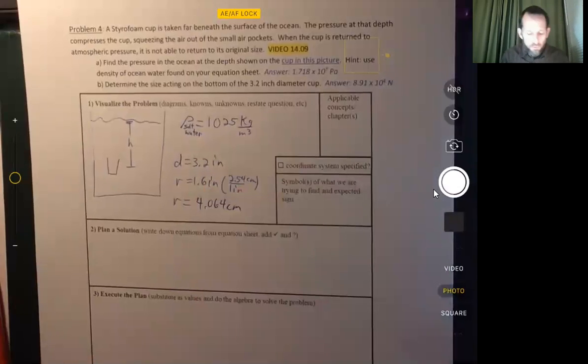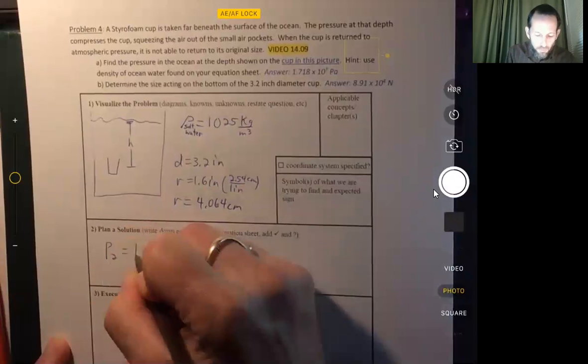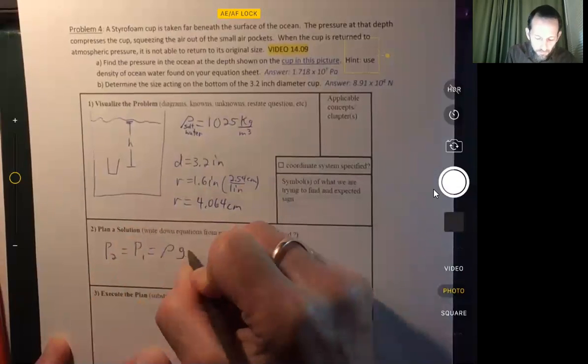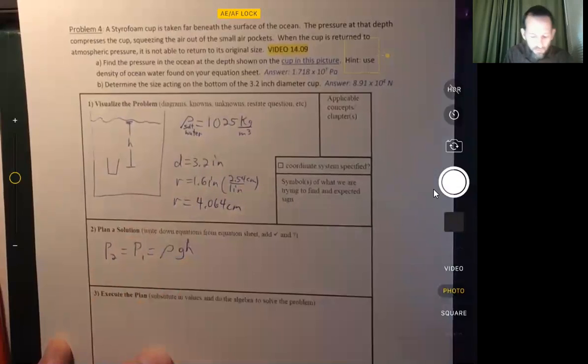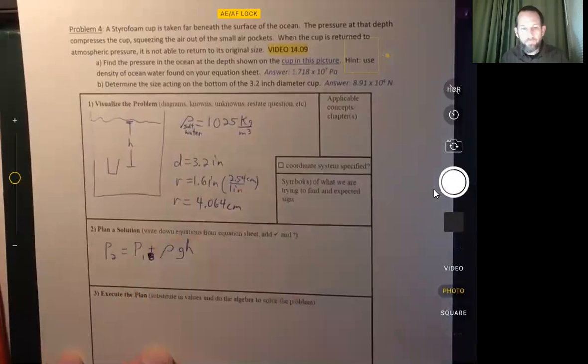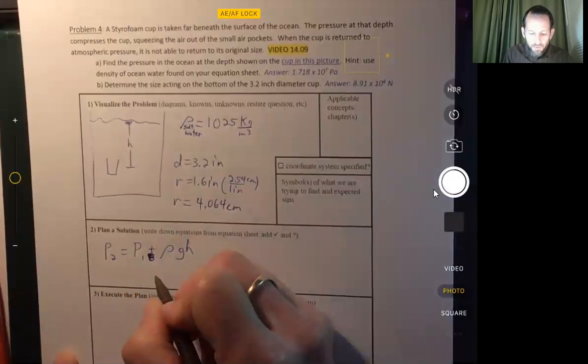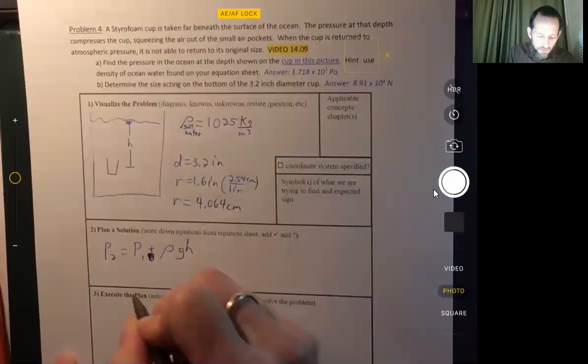We don't know too much other than that. We know that pressure varies with depth according to this equation. Oops. I put equals equals, but this is supposed to be a plus sign there.